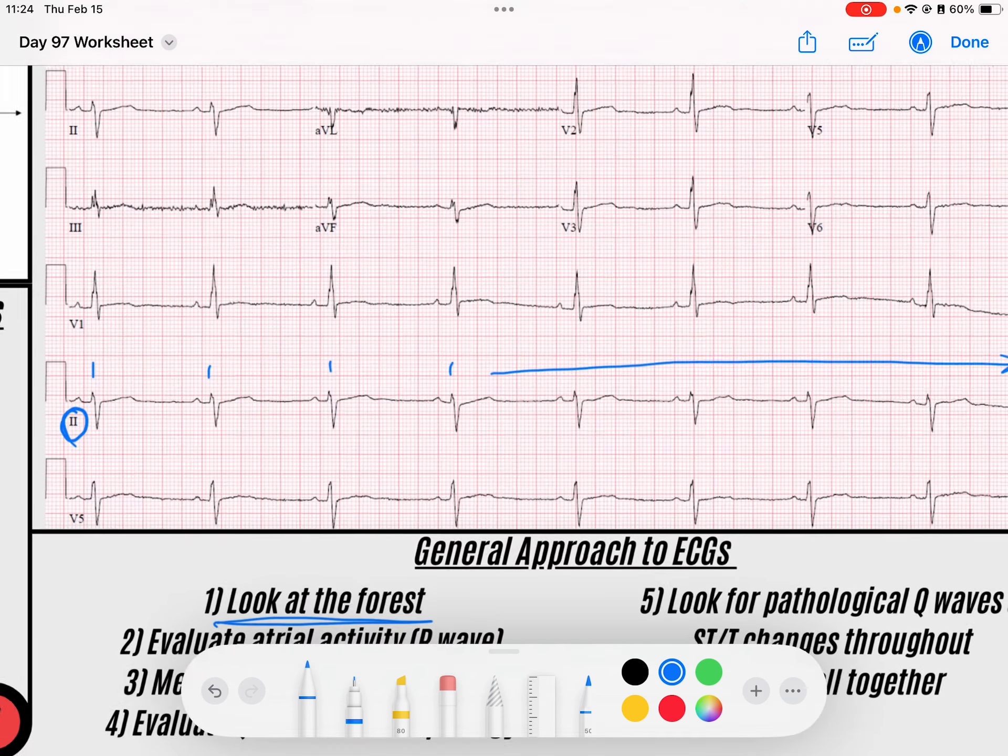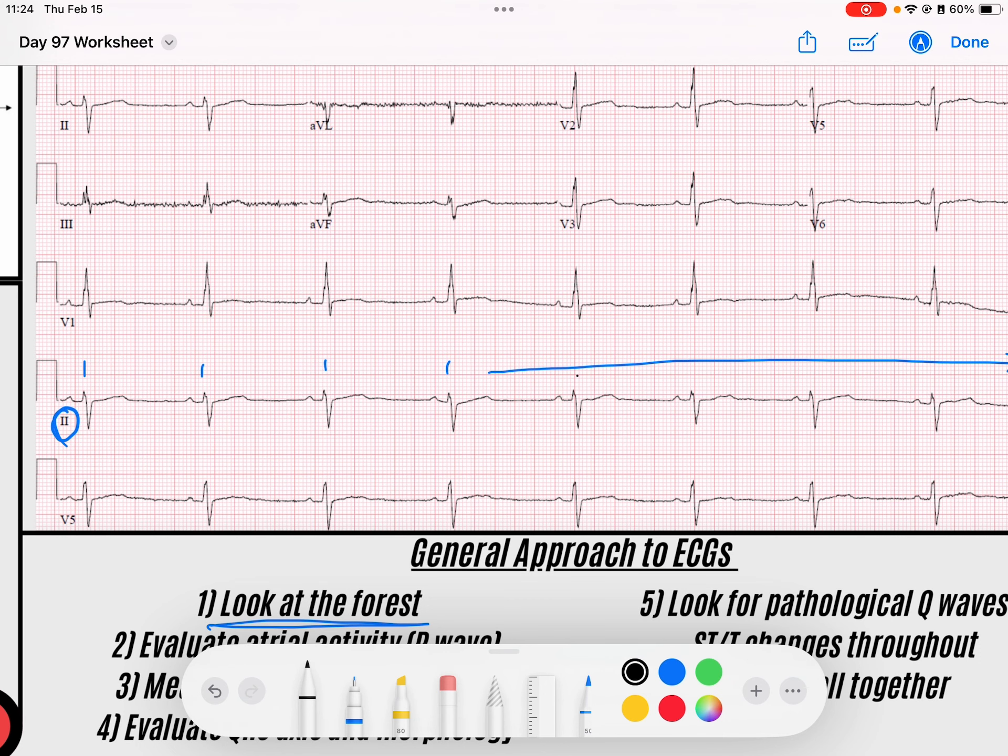If I want to get an average rate here, maybe I'll choose this R wave that ends on a solid line and we'll go to this one: 300, 150, 100, 75, 60, 50. So maybe we'll call this just over 50, maybe 53 beats per minute. And so we've got a bradycardia.